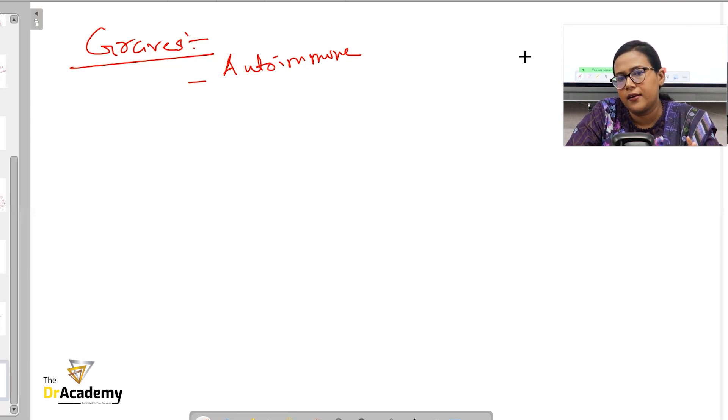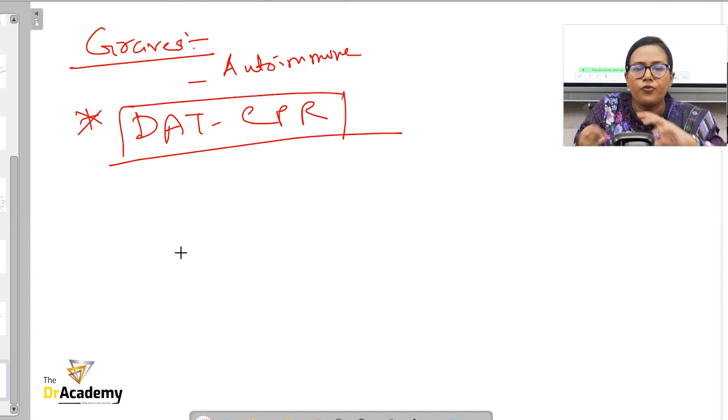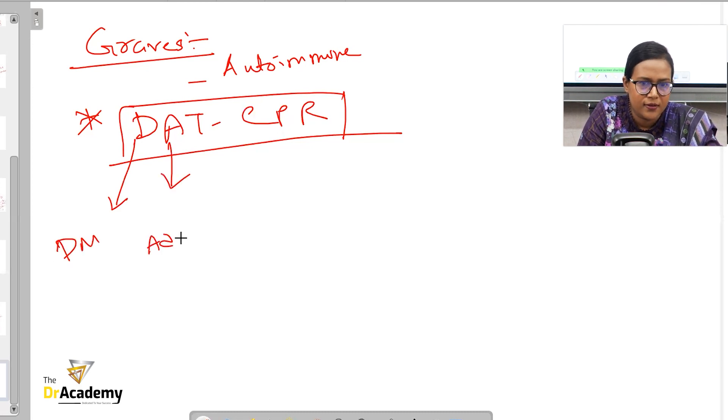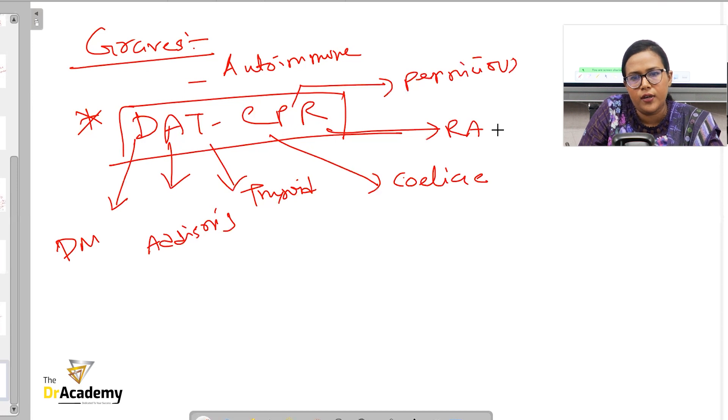I remember it as a very generalized rule, like DAT-CPR. This encompasses a lot of autoimmune conditions at the same time. By D, I mean type 1 DM. By A, I mean Addison's. By T, I mean thyroid disease. Could be thyroid toxicosis, could be hypothyroidism. C is for celiac. P is for pernicious anemia. And R is for rheumatoid arthritis. So when you get one autoimmune condition, look actively for any - there are several other autoimmune diseases, but these are the most common autoimmune associations. So try to remember it like that.